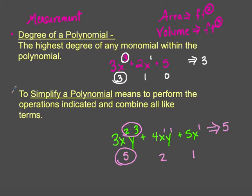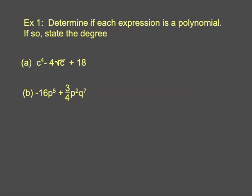Today we're also going to simplify polynomials by adding, subtracting, and multiplying — which means performing the indicated operations and combining all like terms. We will also be dividing polynomials in the near future. Let's look at two examples: determine if each expression is a polynomial. Remember that a polynomial is only made up of monomials, so if it breaks the monomial rules, it is not a polynomial. Looking at example a, I have c to the fourth minus four square roots of c plus 18. A square root cannot be a monomial, so this does not classify as a polynomial.